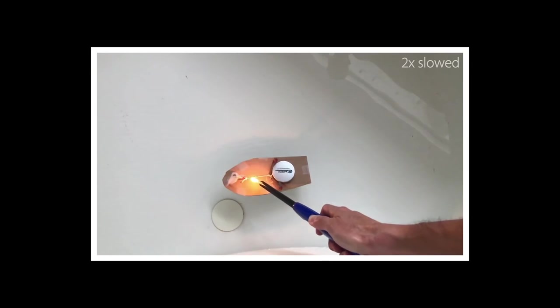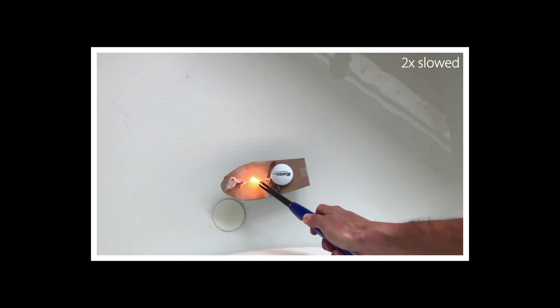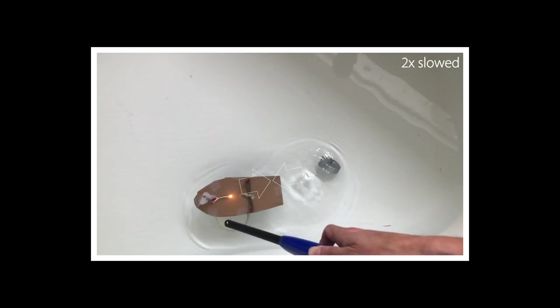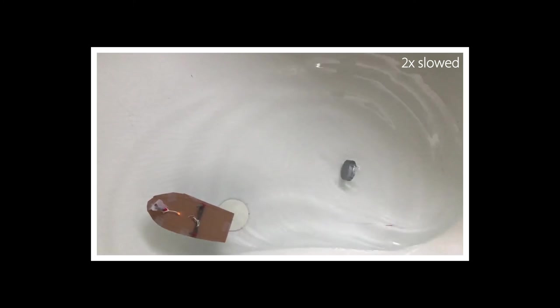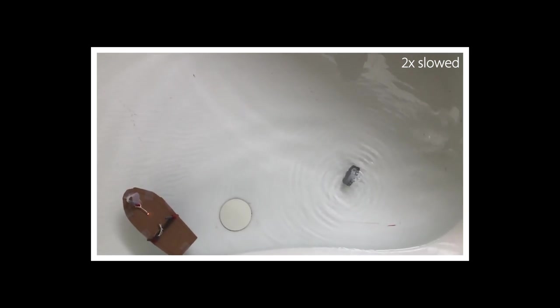The boat has a rubber band that when the string holding the rubber band breaks, shoots the mincan forward. The rubber band pushes the mincan and the mincan pushes back on the rubber band which sends the boat backwards.